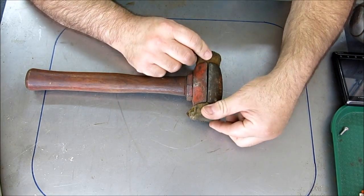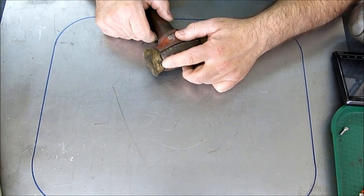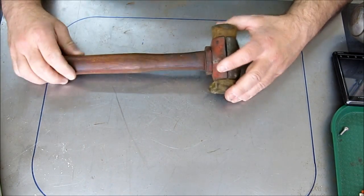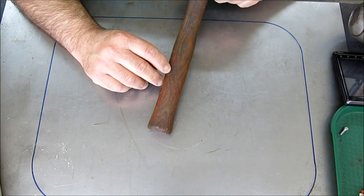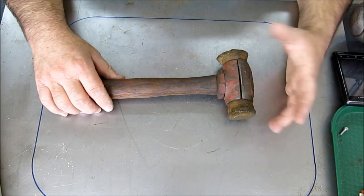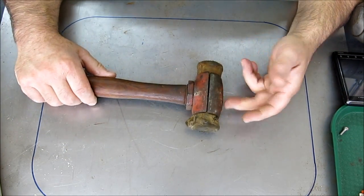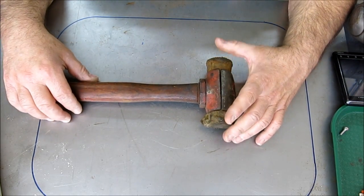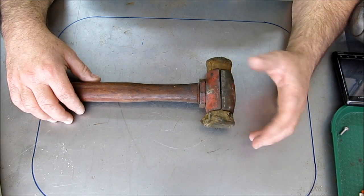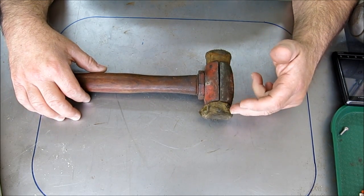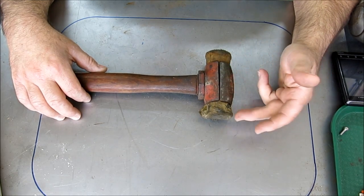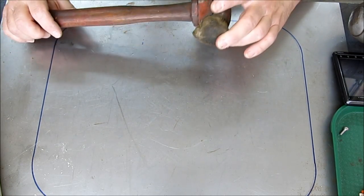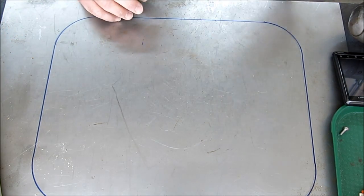This is a Chicago split head rawhide hammer. You loosen this screw here and the head opens up and you can remove the faces. It was marked ten dollars. It's got the original handle on it, which you can see here. It says number two on it too.